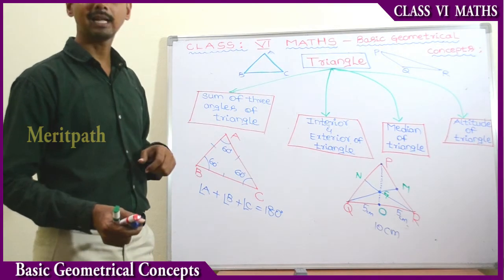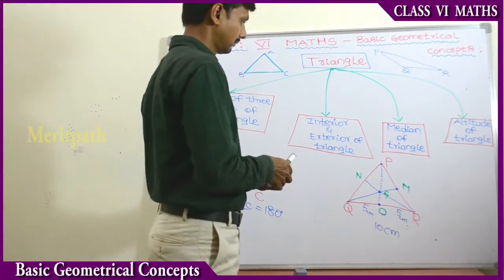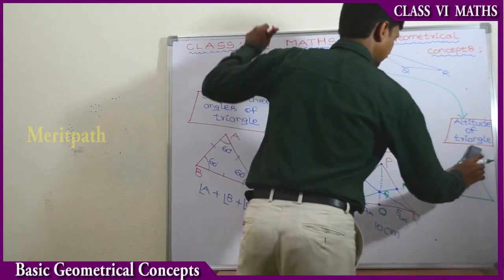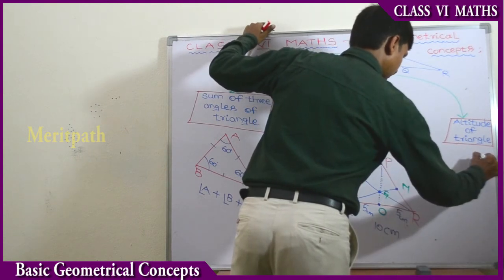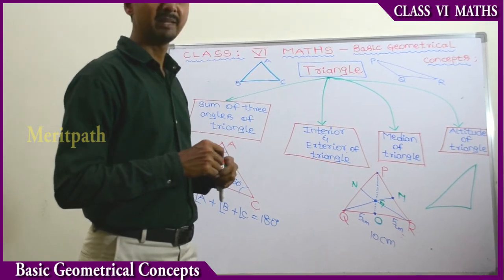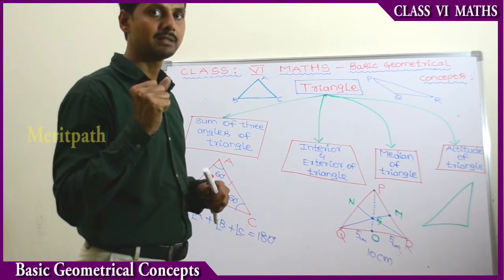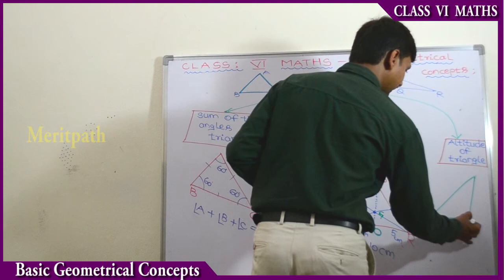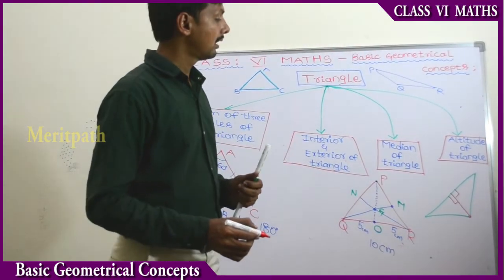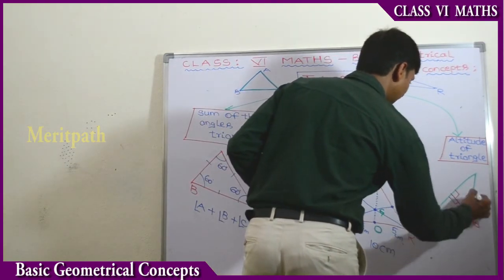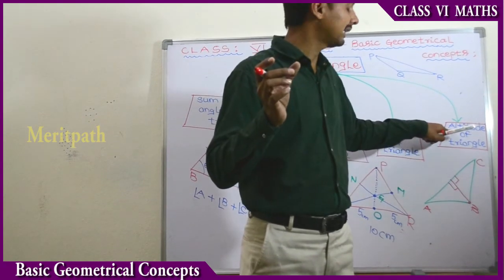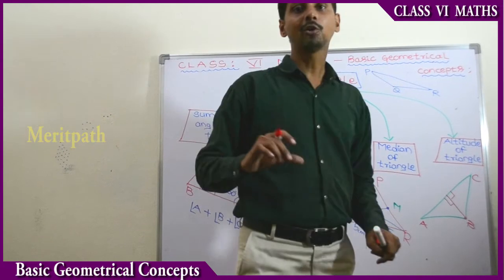Let's go to the next concept: Altitude of a Triangle. If we take any one vertex of the triangle and draw a line segment to the opposite side which makes 90 degrees, we call it the Altitude of the triangle. Here A, B, C are the 3 vertices. We take one vertex and draw a line segment to the opposite side making 90 degrees. We can draw 3 altitudes for a triangle.